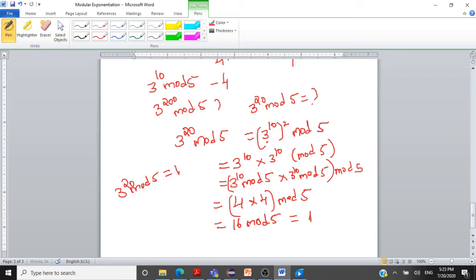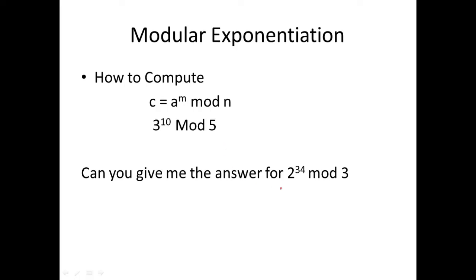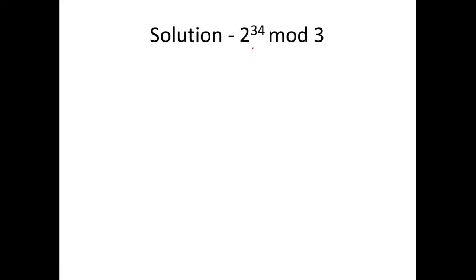So that is how you compute modular exponentiation: c = a^m mod n. Now, can you compute 2^34 mod 3 using the concepts learned? Let's go through the solution step by step. We start with the smallest exponent: 2² mod 3, which is 4 mod 3 = 1.